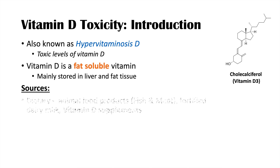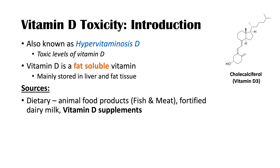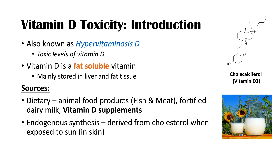Some of the sources of vitamin D include exogenous sources — outside the body — such as dietary sources like animal food products including fish and meat. We can also get it from fortified dairy milk, where vitamin D is added to help us absorb calcium. We can also get vitamin D from supplements, which can be one of the major causes of toxicity. Endogenous synthesis also occurs when cholesterol in our skin is exposed to sunlight.